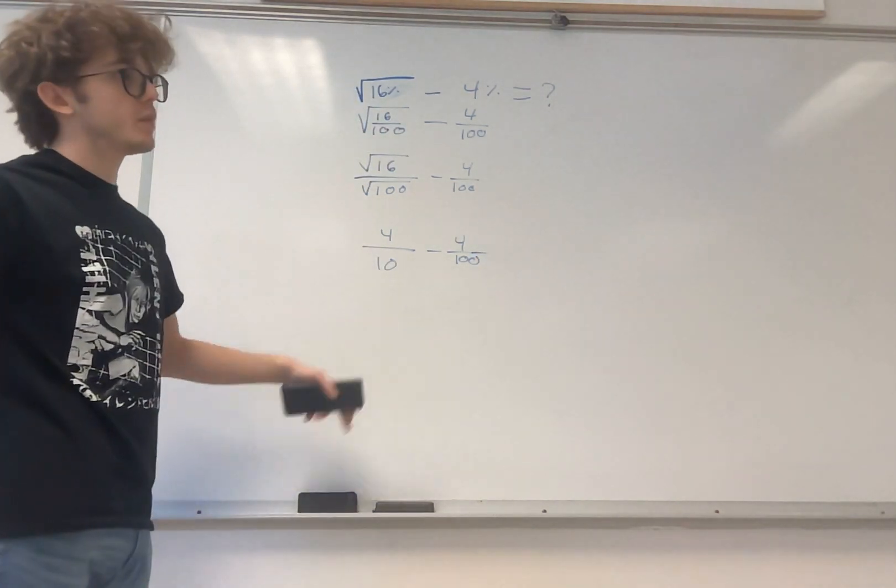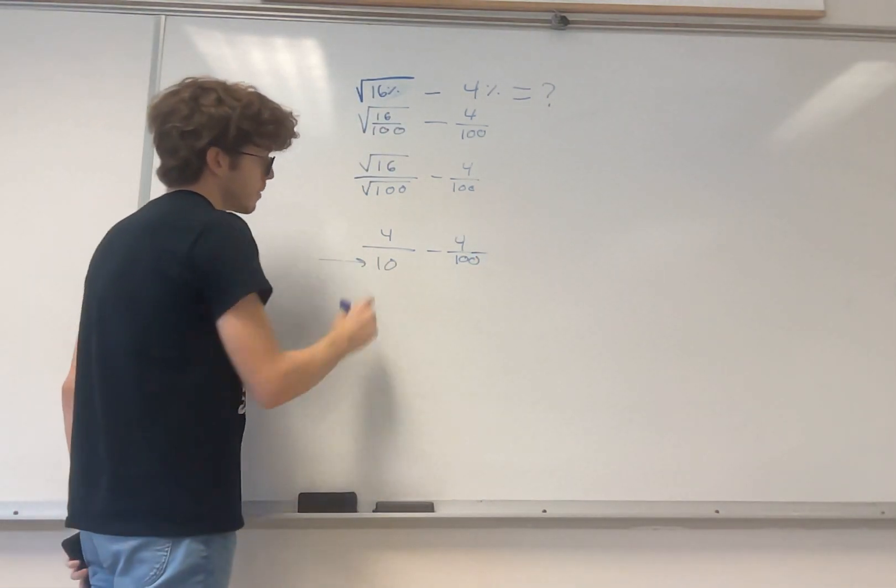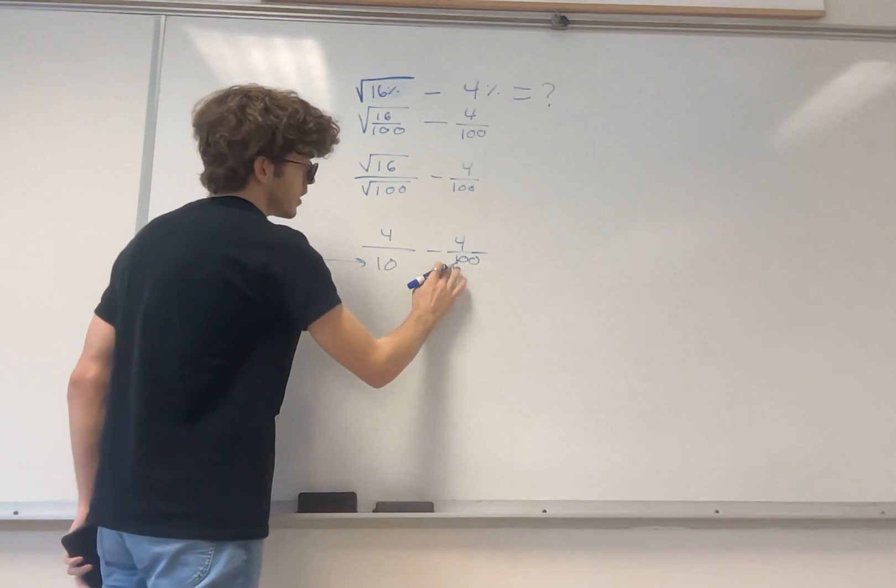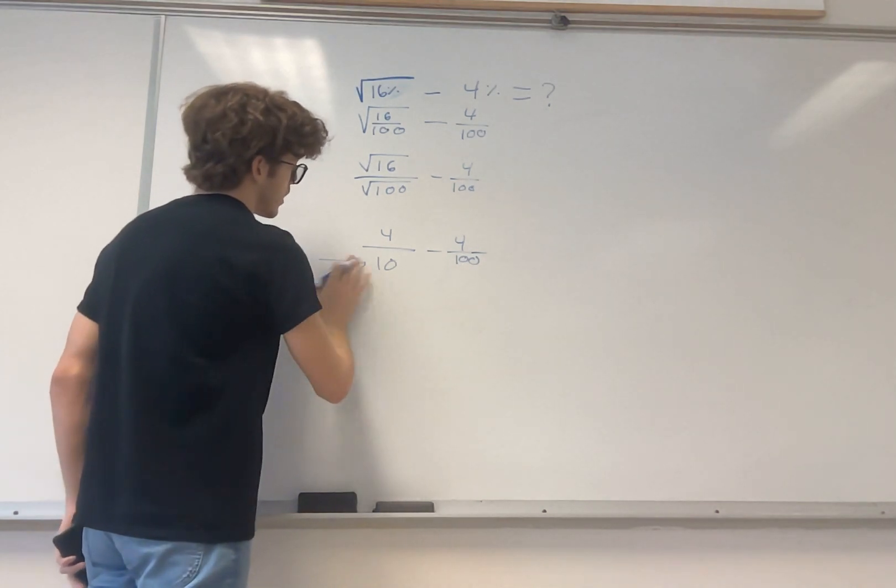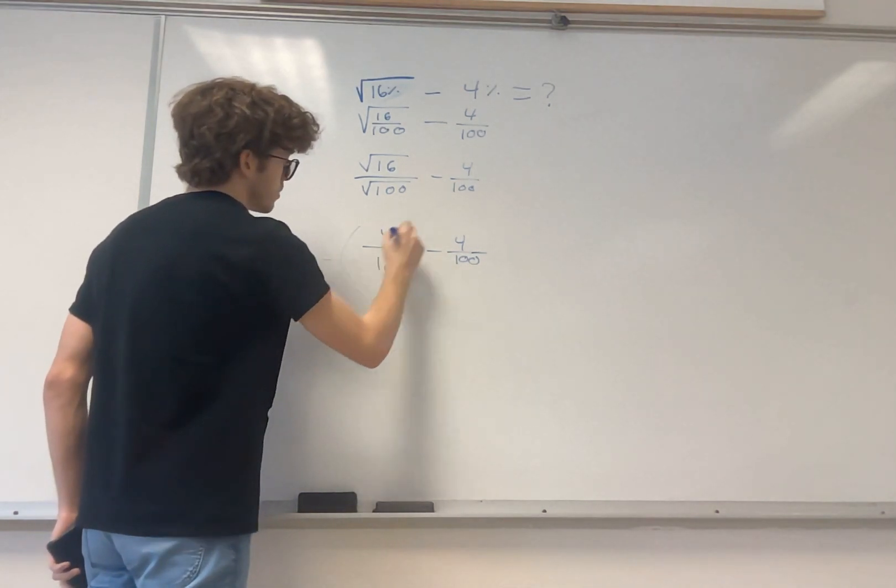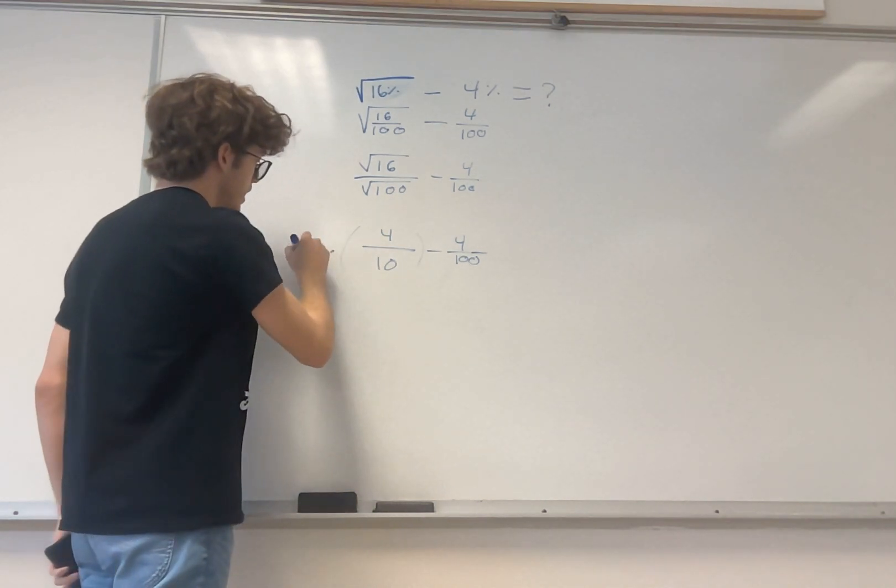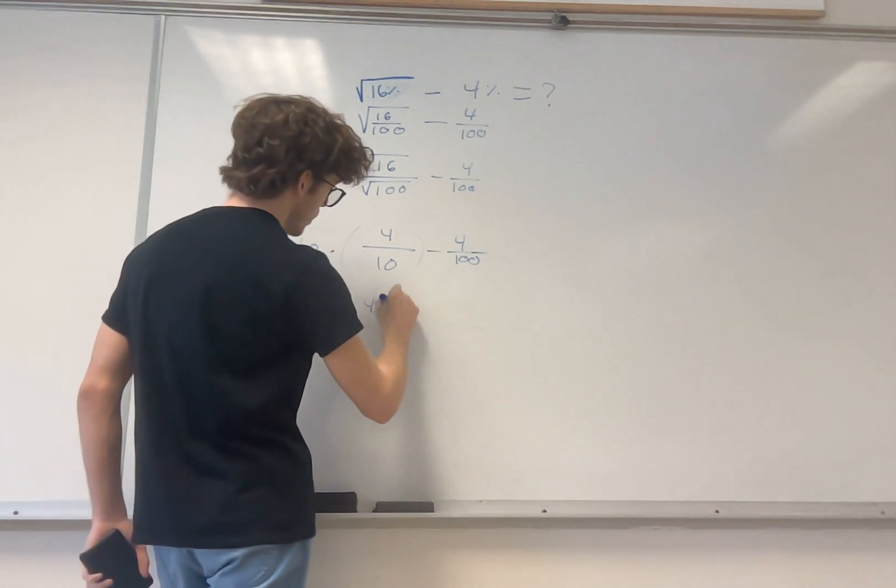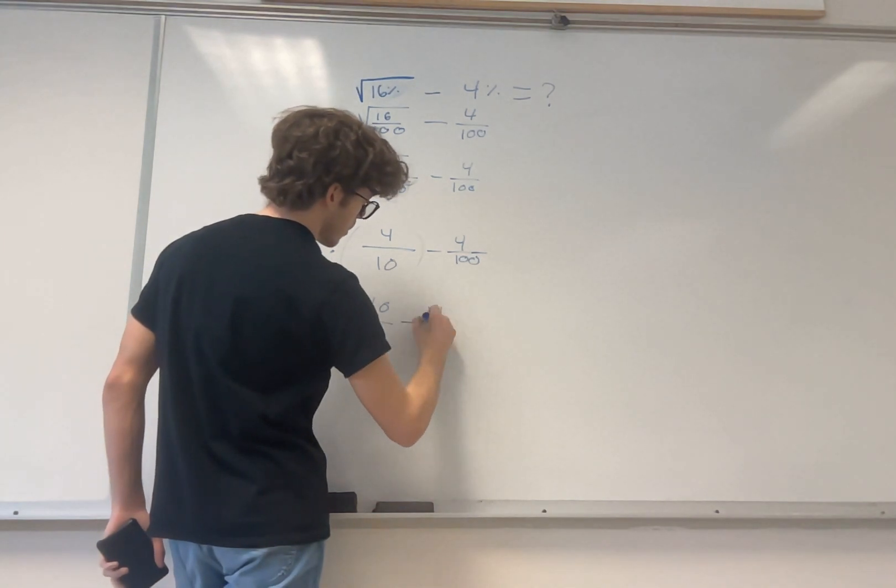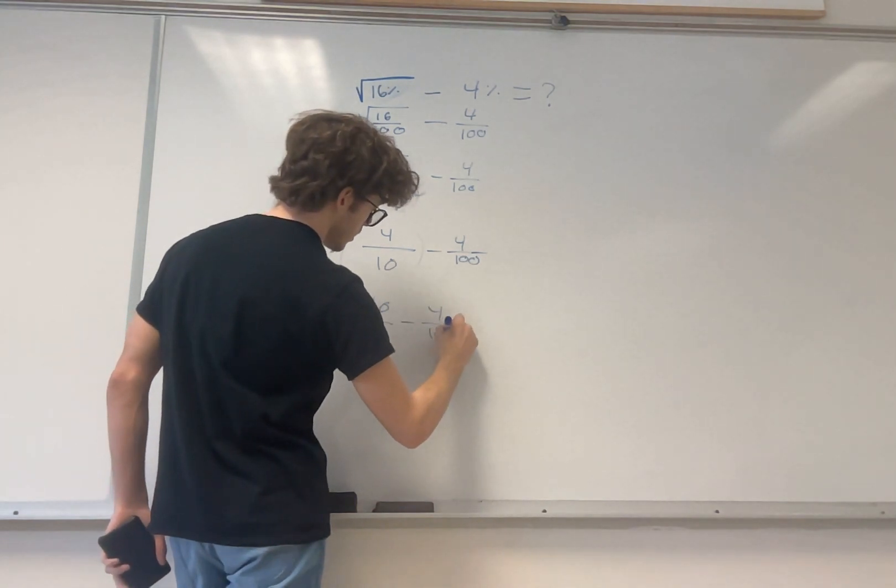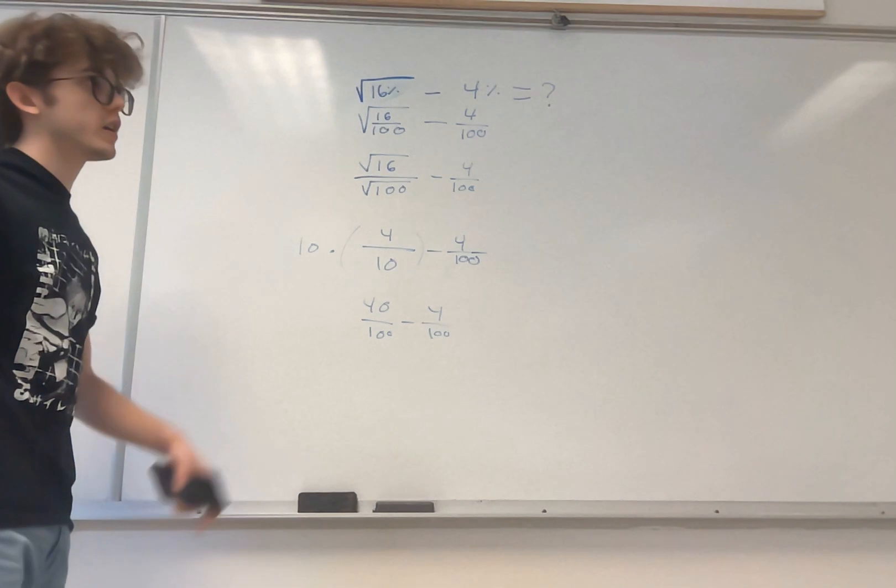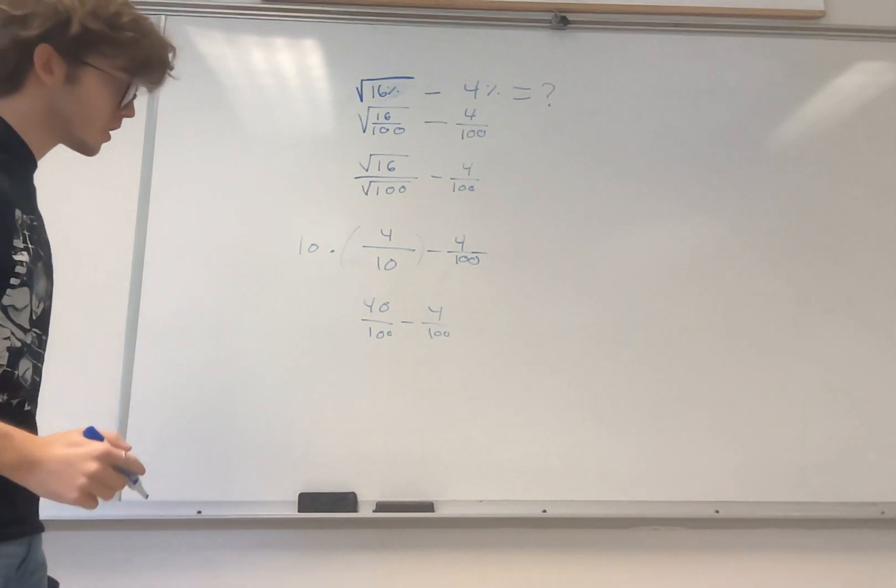Now, we want to get a common denominator. This is a 10, this is a 100. So if we multiply this term here by a factor of 10, we're going to get 40 over 10 minus 4 over 100. Or sorry, 40 over 100 minus 4 over 100.